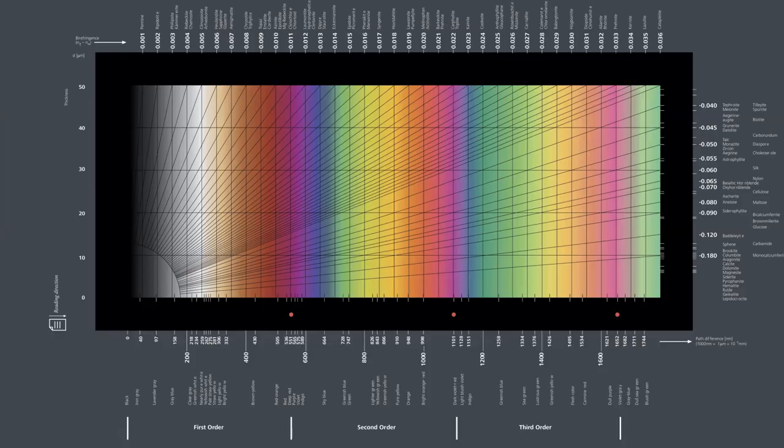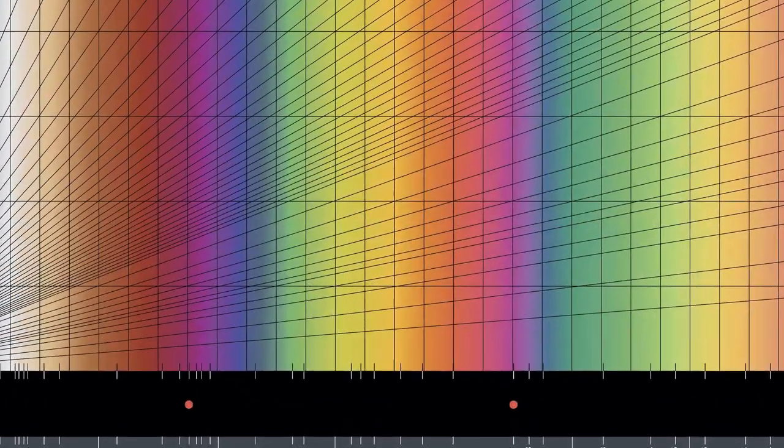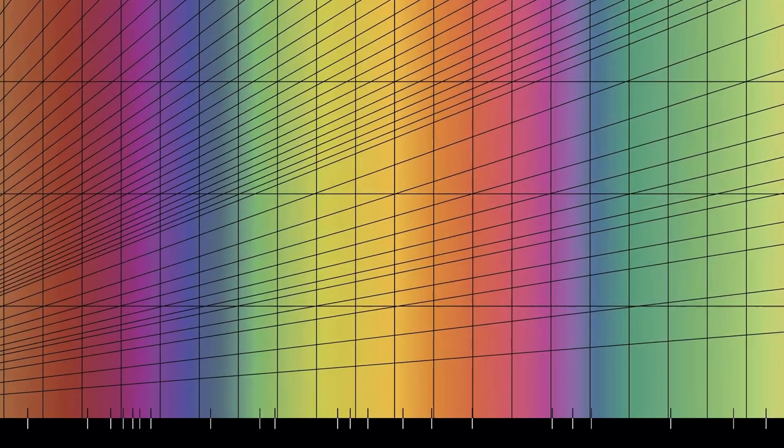Casio were able to harness this effect and produce a colour display out of it. What's even more amazing is that each pixel is never just one specific colour.